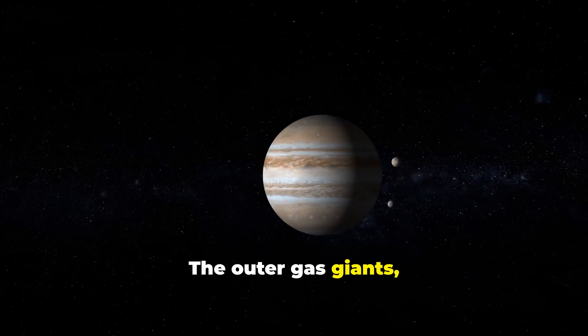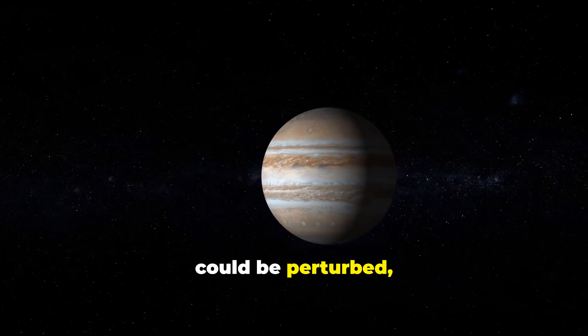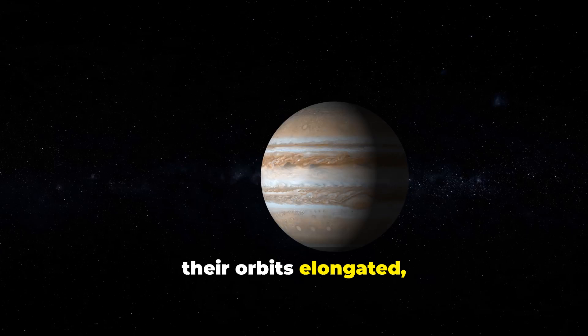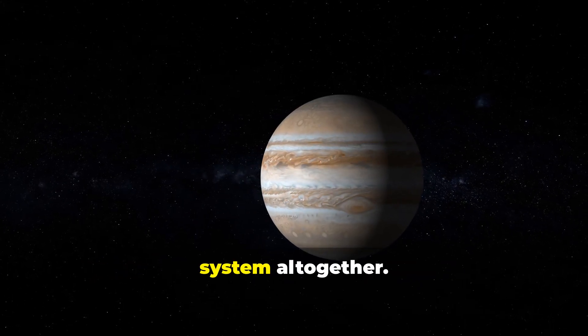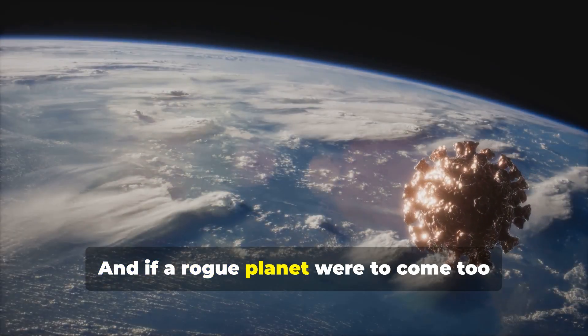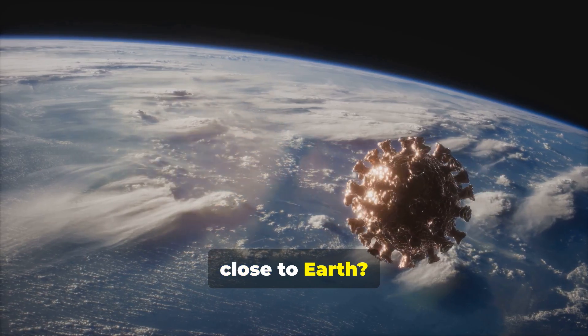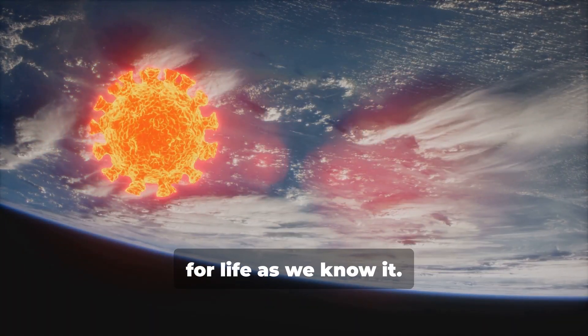The outer gas giants, Jupiter, Saturn, Uranus, Neptune, could be perturbed, their orbits elongated, potentially even ejected from the solar system altogether. And if a rogue planet were to come too close to Earth? Well, let's just say it wouldn't be good news for life as we know it.